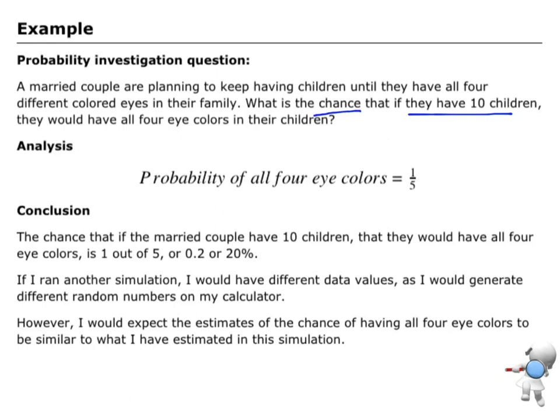So the key idea here, you can see it on the bottom, is that if I do another simulation, I will get different data values because I'm getting different random numbers. But my estimates of that probability, I expect, so in this one I found the probability of a fifth or 20%, if I did it again, I would expect results about that same value.